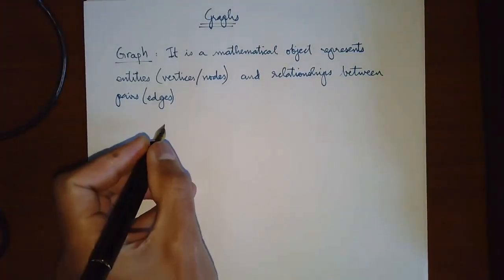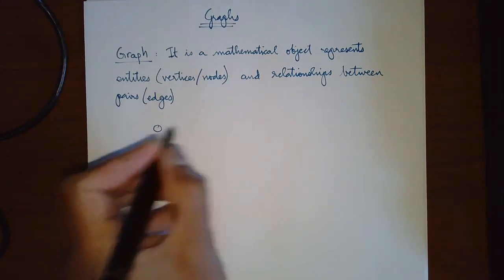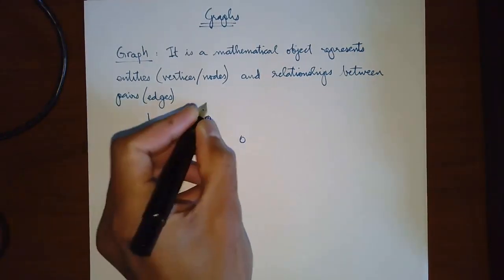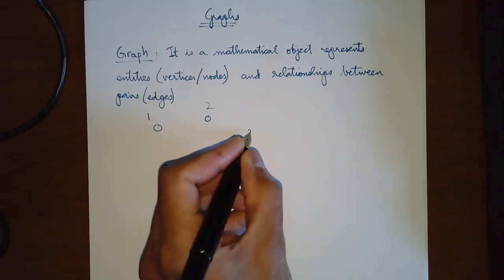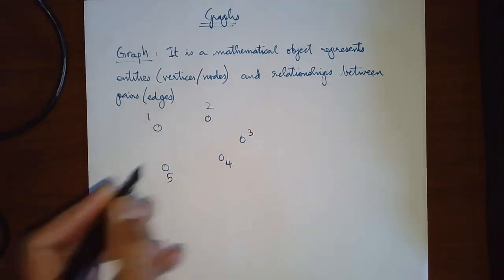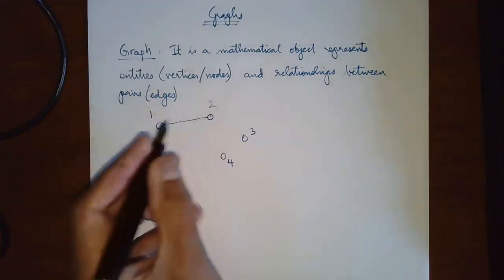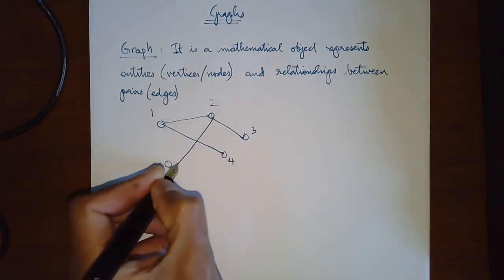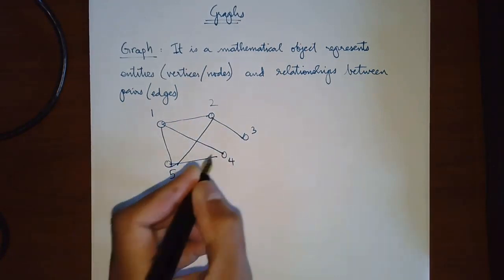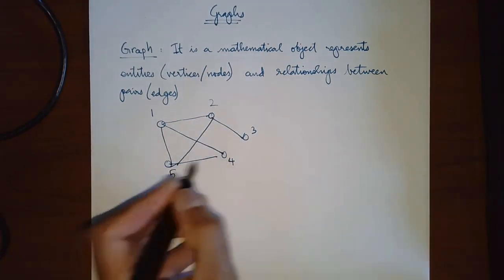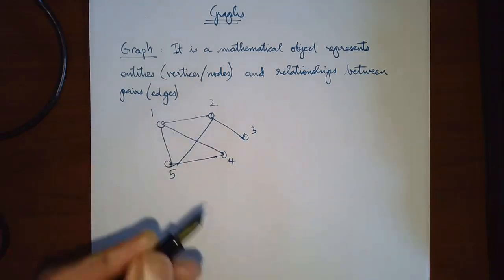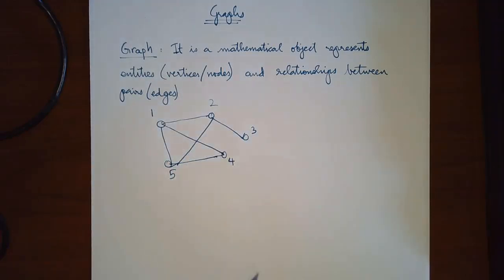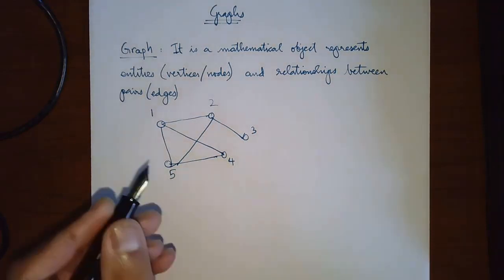The way that you would draw a graph is something like this. You have a bunch of vertices labeled 1, 2, 3, 4, 5 — but the vertices could have any kind of label. And then you have edges connecting them. You shouldn't think of this as being drawn in the plane; this is just merely a representation of this graph.